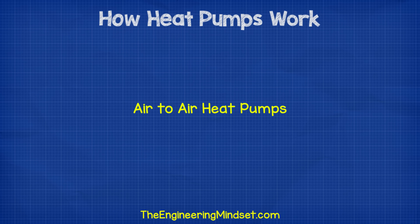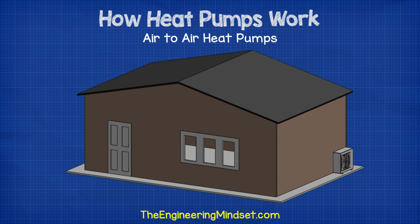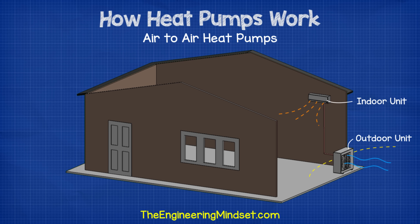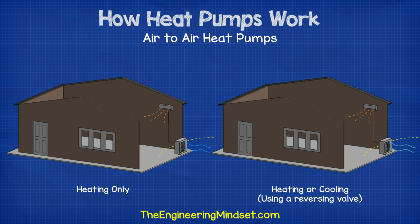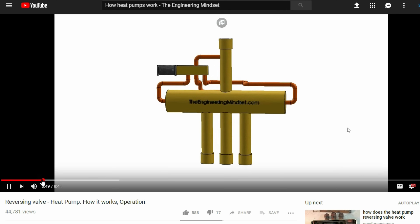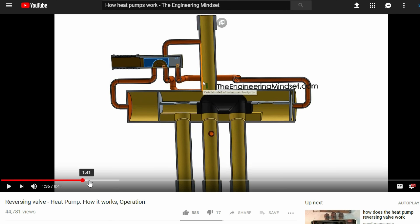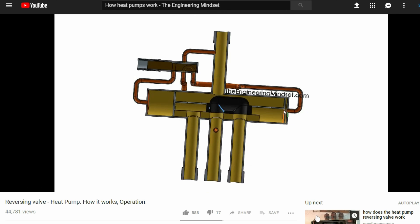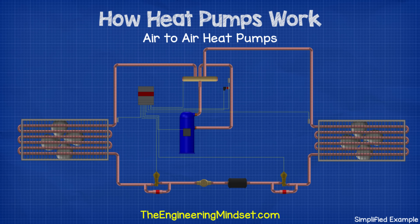The first thing we're going to look at is the air to air heat pump. These are the most common heat pump types. They often look very similar to a standard air conditioning split unit with a unit located outside and another unit located inside. These can either work as a heating only device, or the more popular choice is to have a device which can provide both heating or cooling by making use of a reversing valve. We've covered reversing valves in our previous videos — links to that can be found in the video description below. There are a few different ways to configure a reversing valve heat pump; I'll show you a simple, typical example.